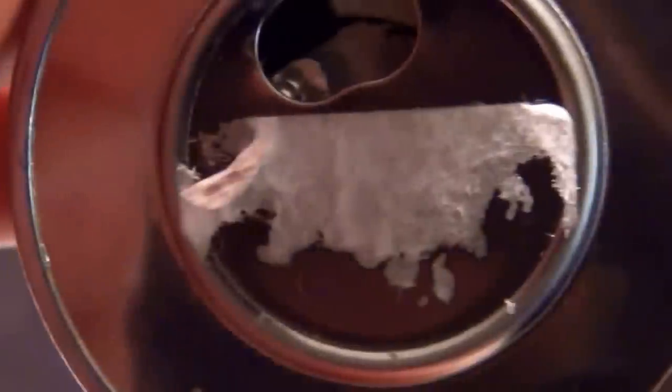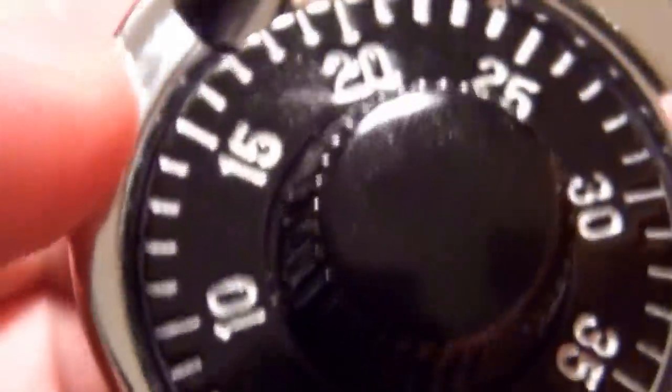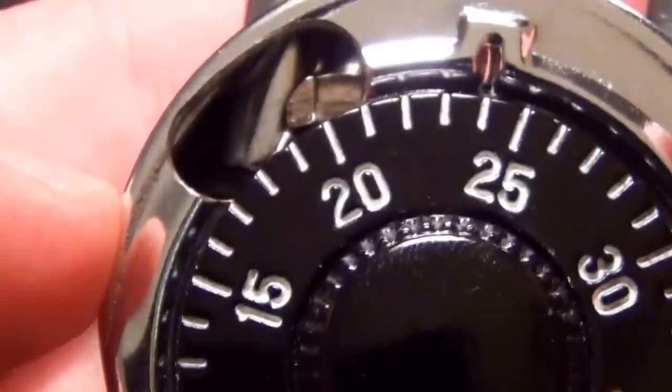We're going to go the opposite direction now and the second wheel gate is going to line up with the third wheel gate which will give us our second number in the combination. Let's take a look: 24.